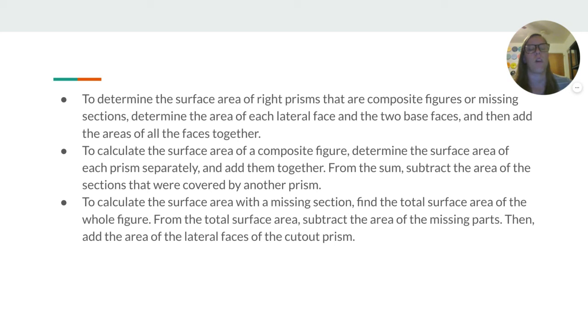So, to determine the surface area of right prisms that are composite figures or missing sections, determine the area of each lateral face and the two base faces, and then add the areas of all the faces together. To calculate the surface area of a composite figure, determine the surface area of each prism separately and add them together. So, this would be if you have a larger figure that has multiple in it. From the sum, subtract the area of the sections that were covered by another prism.